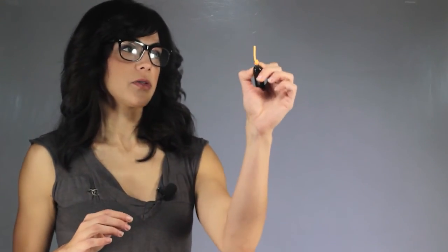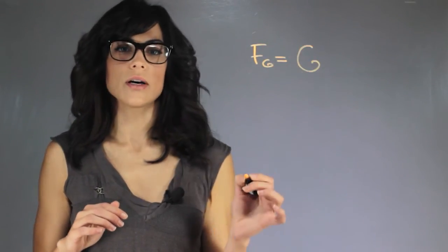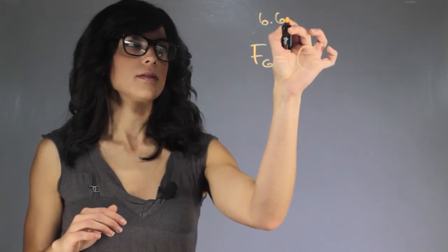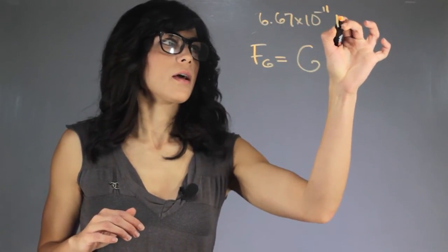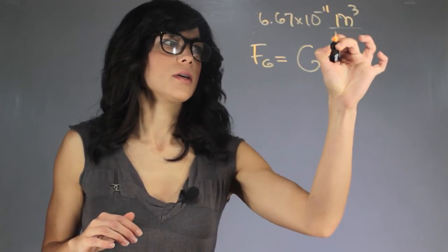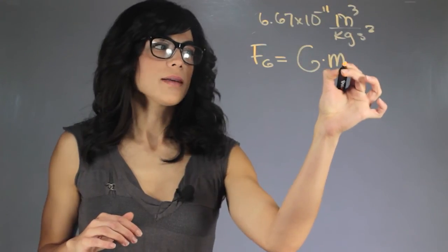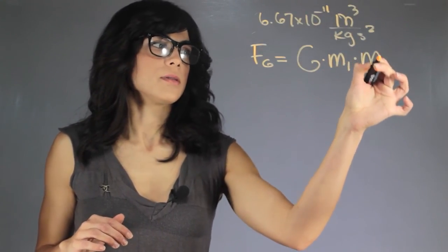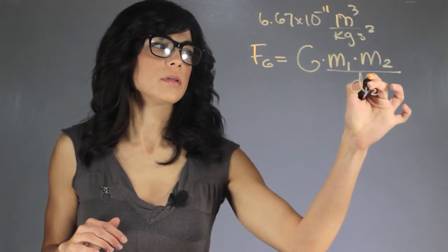The thing to think about here is that the gravitational force of a planet is the gravitational constant, which is about 6.67 times 10 to the minus 11 meters cubed per kilogram seconds squared, multiplied by the first mass, the second mass, and the distance between them squared.